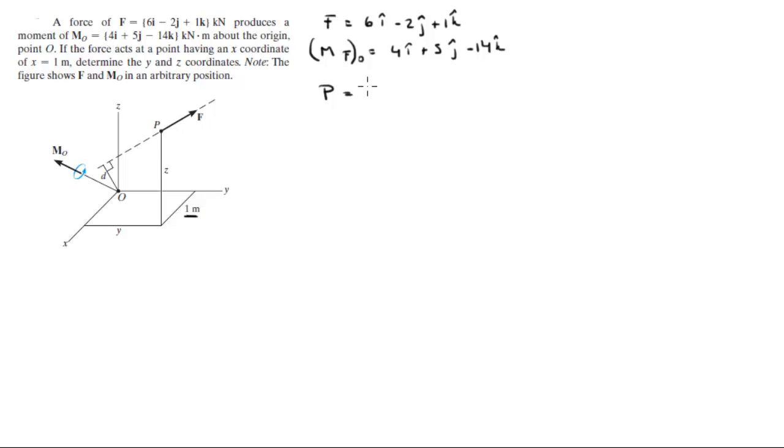P sits at 1 in the i because we're given the 1, plus let's call it Py in the j plus Pz in the k. These are the values we're trying to find.